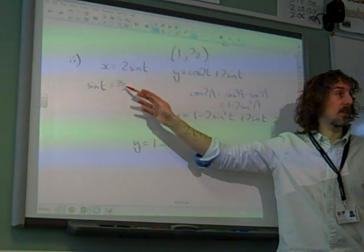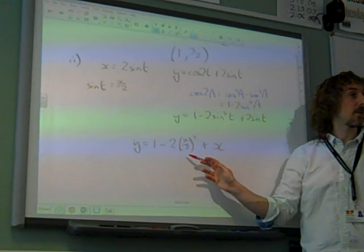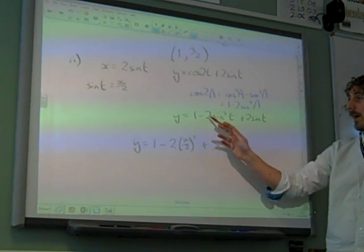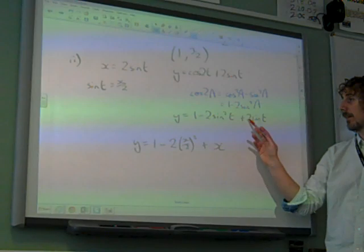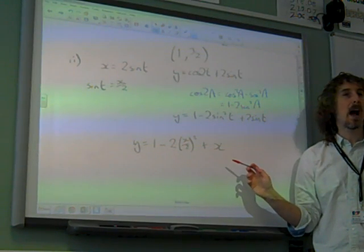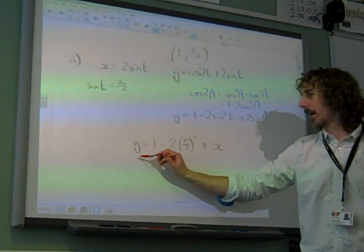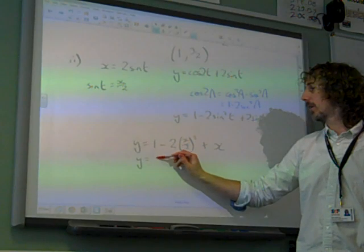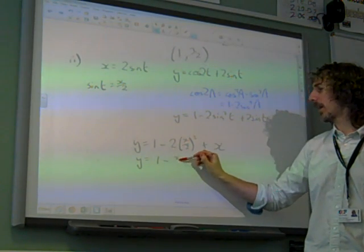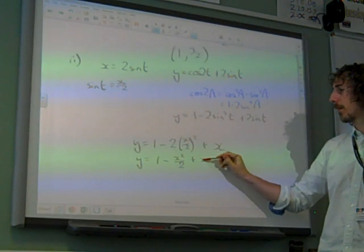And if sine(t) is x over 2, sine squared t is (x/2) squared. So it's 1 minus 2(x/2) squared, plus 2sine(t), which is x. How much nicer is that than what many of you wrote? You wouldn't have left it like that. You might have written it as y equals 1 minus x squared over 2, because that's x squared over 4, double it as x squared over 2, plus x.